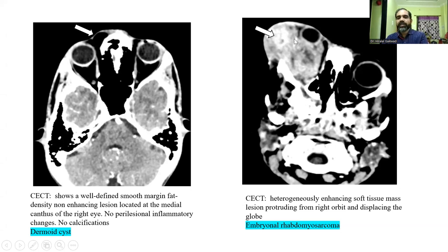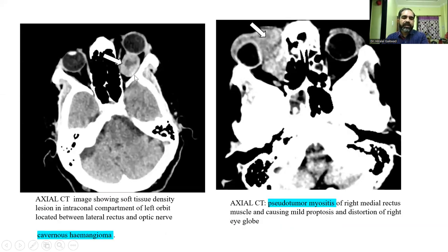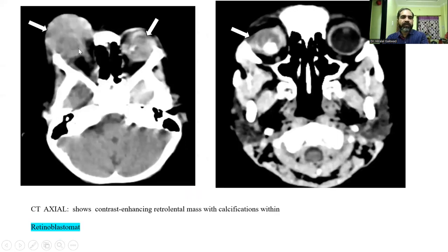In this image, there is a heterogeneously enhancing soft tissue mass lesion protruding from the right orbit and displacing the globe. This was a case of embryonal rhabdomyosarcoma. The CT shows a soft tissue density lesion in the intraconal compartment of the left orbit located between the lateral rectus and optic nerve — a case of cavernous hemangioma. Another image shows pseudotumor myositis involving the medial rectus muscle causing mild proptosis. Additionally, contrast-enhancing retrolental masses with calcifications represent retinoblastoma.